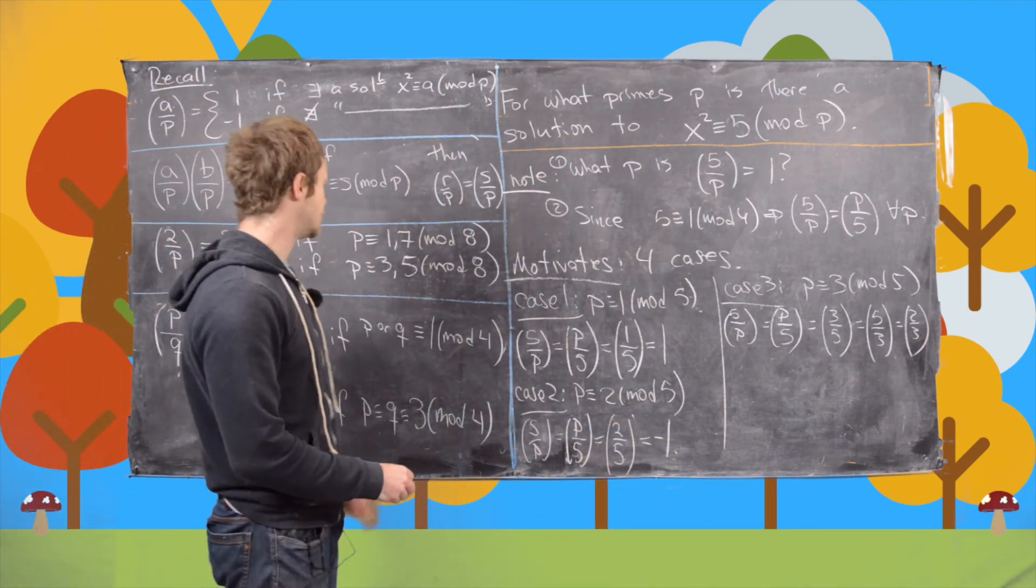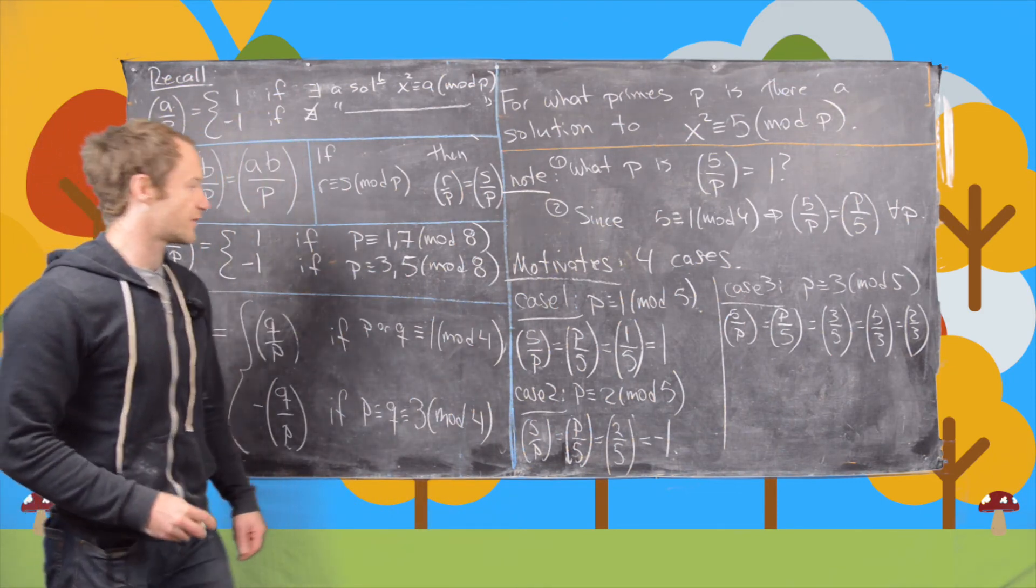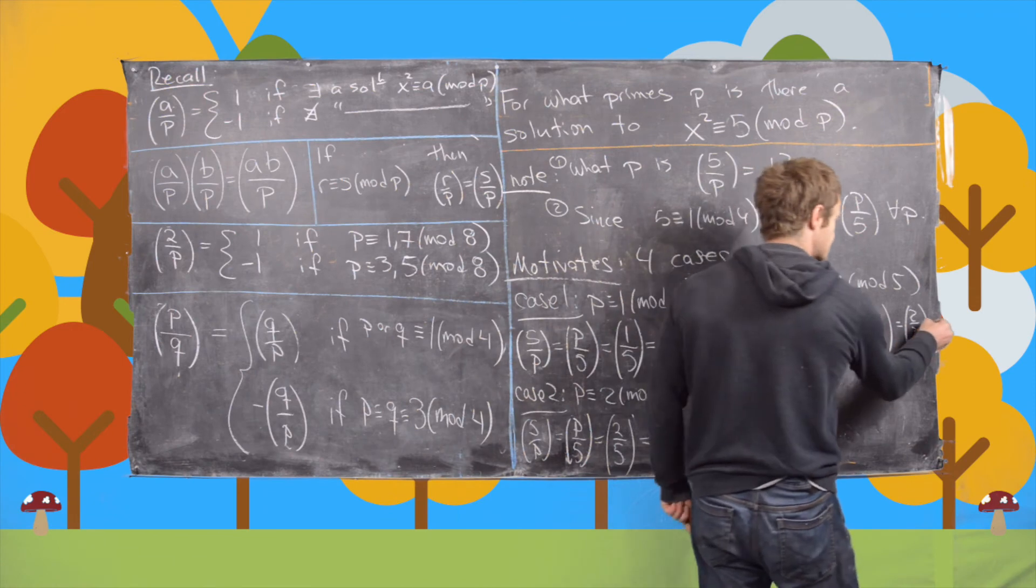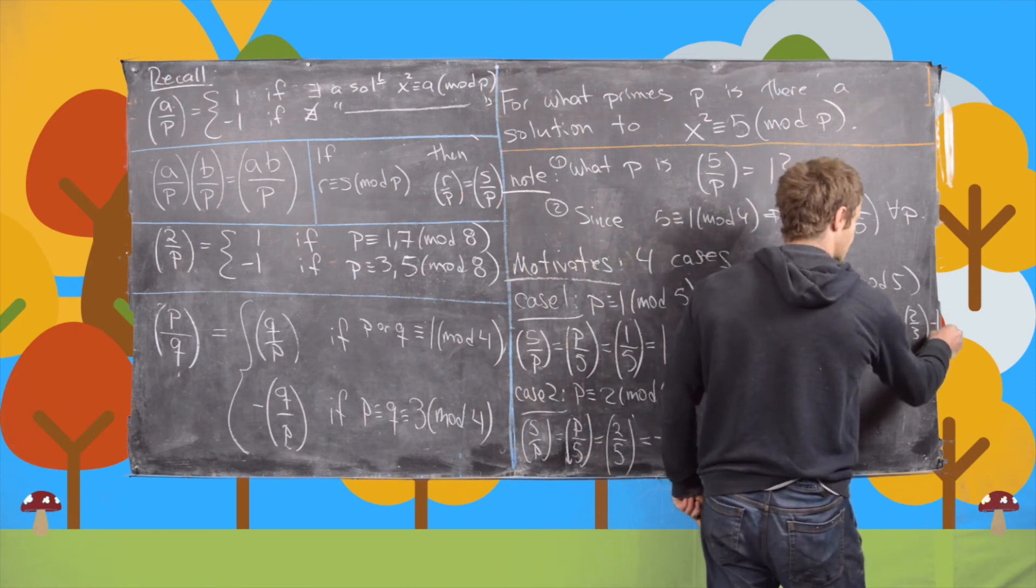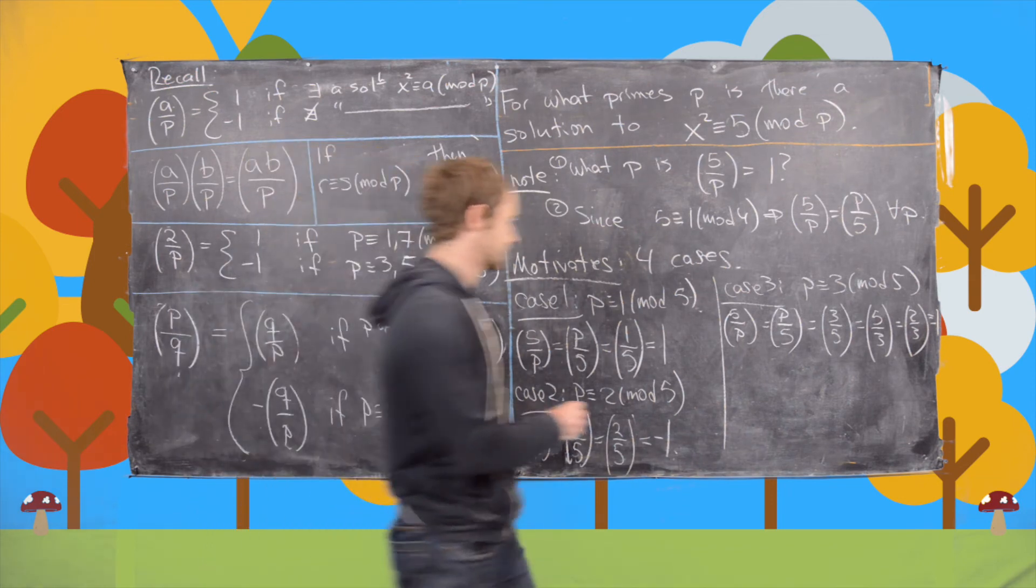But now that's going to be equal to negative 1 because 3 is of the form 3 mod 8. So this is negative 1. And now let's look at case 4.